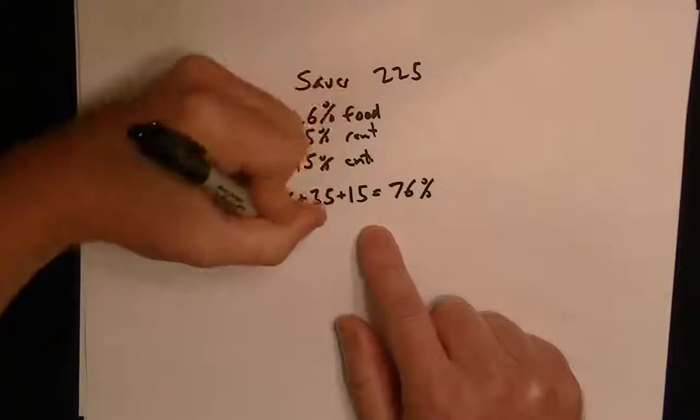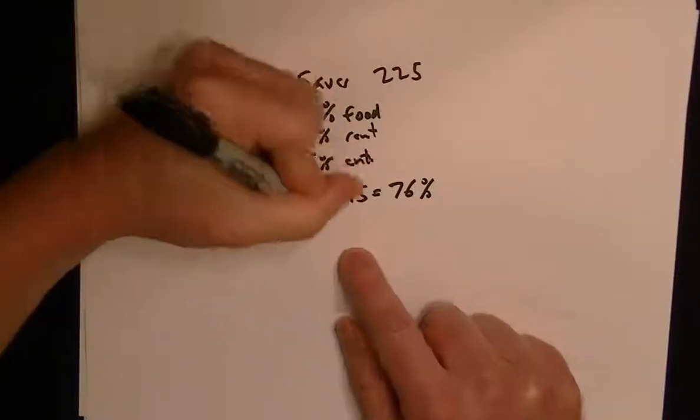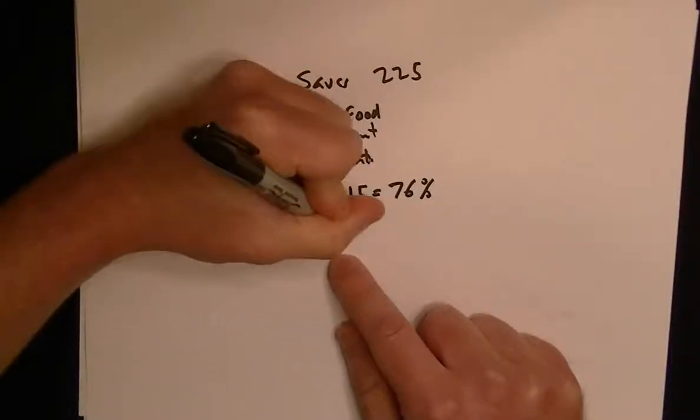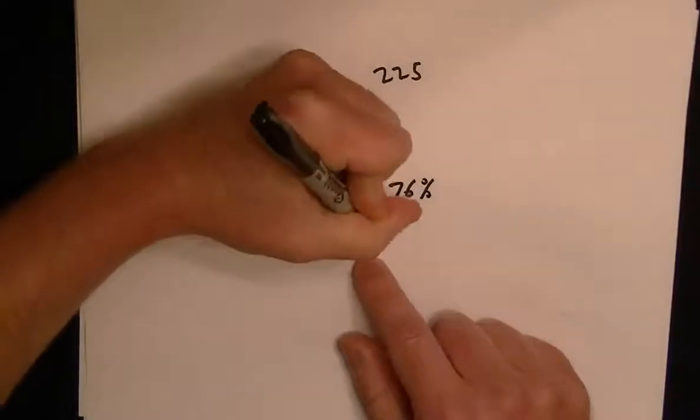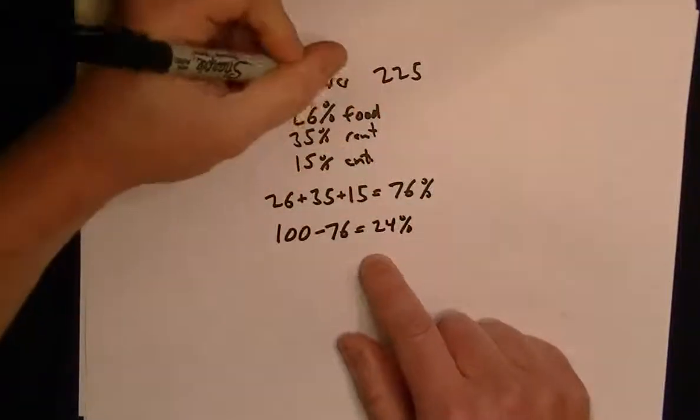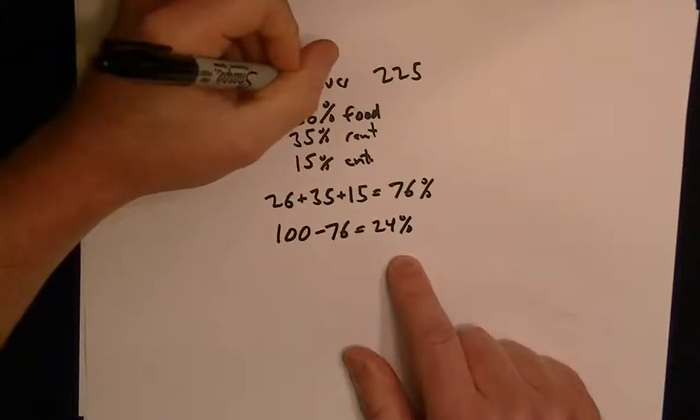Okay, so that means he has 100% of his earnings that he starts with, so if he spends 76%, then he's left with 24%. And we also know that he saves $225.